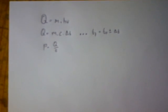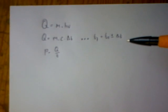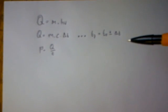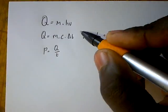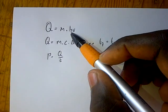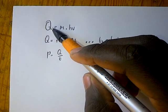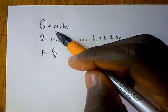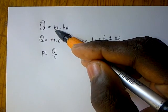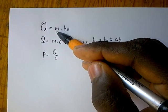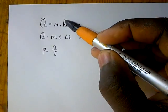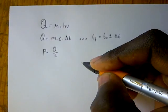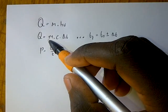Today we're going to look at engineering science and theory — specifically heat energy. We have three formulas to calculate heat energy. The first formula is Q equals m multiplied by Hv, meaning heat energy Q equals mass m multiplied by the heat value. So if we have to calculate the heat energy produced by a fuel, we need the mass of that fuel multiplied by its heat value, which is given in the standard sheet.